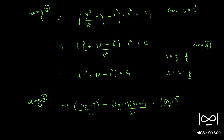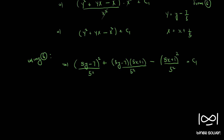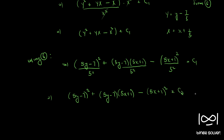Substituting capital Y equals (5y minus 7)/5 and capital X equals (5x minus 1)/5 into Y² plus YX minus X² equals C₁, and multiplying throughout by 25, we get (5y minus 7)² plus (5y minus 7)(5x minus 1) minus (5x minus 1)² equals C₂, another constant.